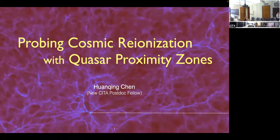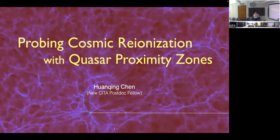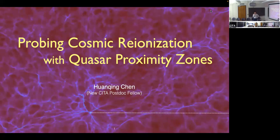Welcome to the CEDAR seminar. Today we have speaker Huan Qing Chen, who joined CEDAR as a new postdoc. Huan Qing is an expert on modeling cosmic reionization at very high redshifts, and will talk about quasar activity and how quasars affect the EoR history, as well as galaxy formation and properties of the intergalactic medium. She got her bachelor's degree in astronomy from Nanjing University, her PhD from the University of Chicago under Nick Gnedin, and in 2019 received the Future Investigator Award from NASA. Let's welcome Huan Qing.